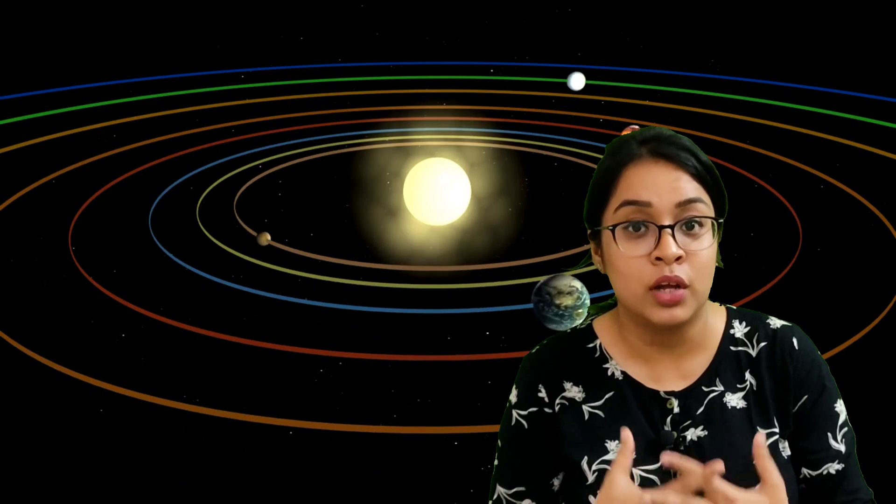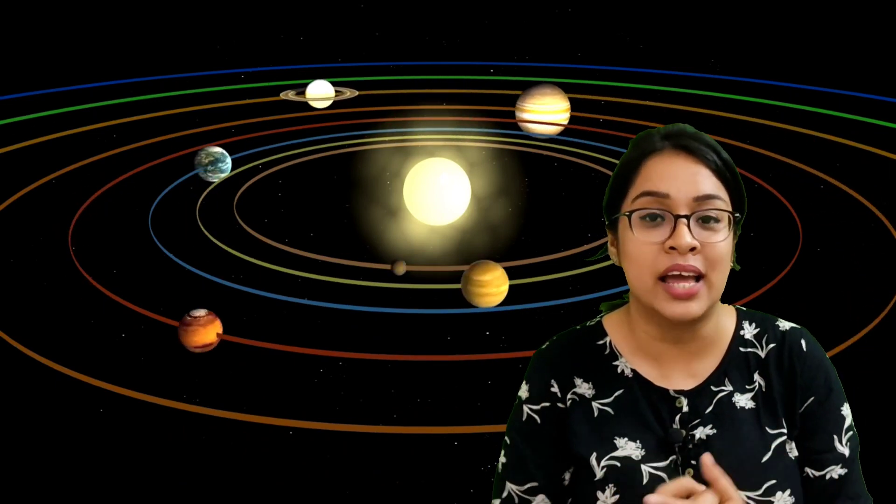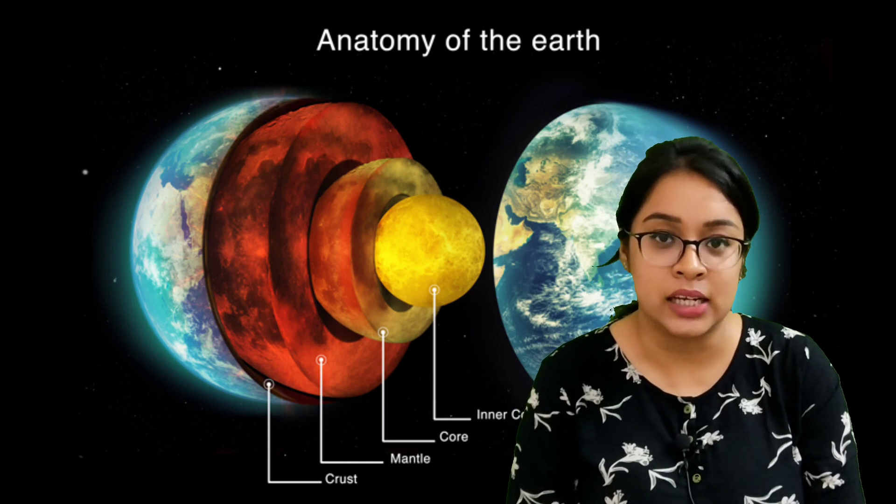The outer planets are a huge ball of gases and they have some external ring-like structures. Now, let us start with the third planet that is our own Earth. Earth is the third planet of the solar system and it is the fifth largest planet of the solar system. Let us know the interior of the Earth in details.